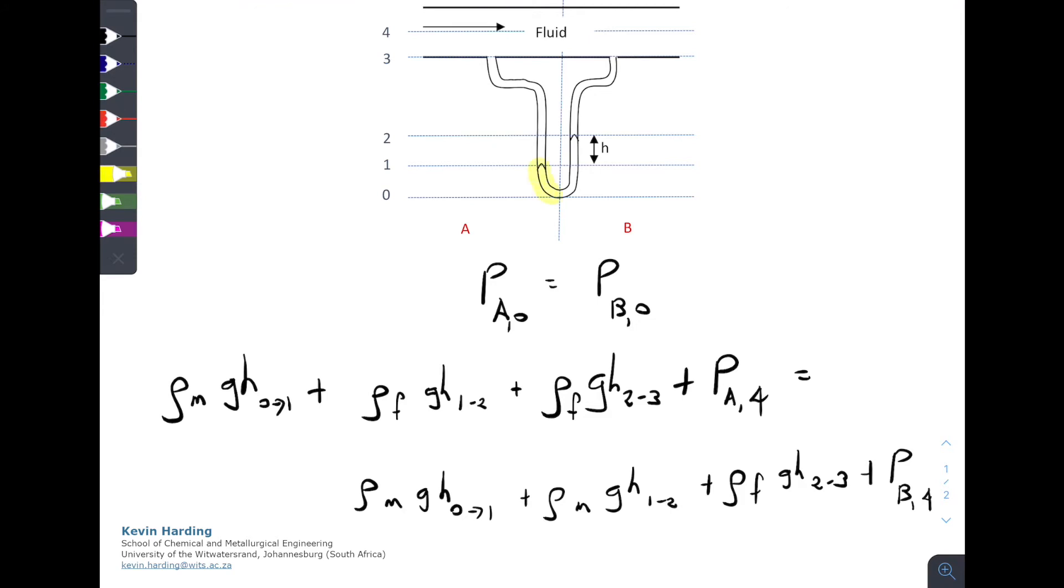So if we notice on the diagram, the section PA from 0 to 1 is going to be the same as PB from 0 to 1. So we can actually cancel out the ρMGH, which is equal to the ρMGH on the right-hand side.